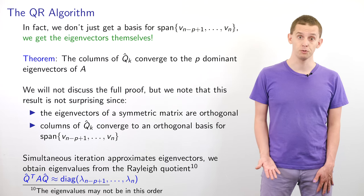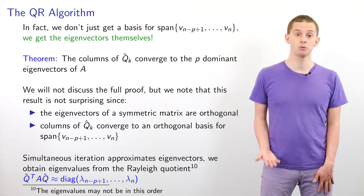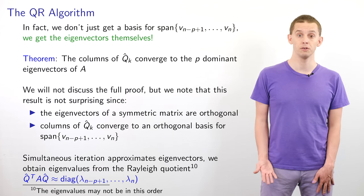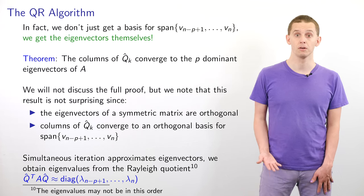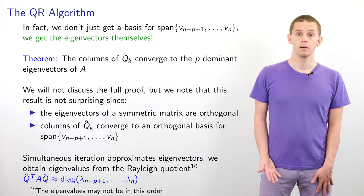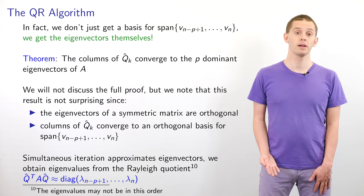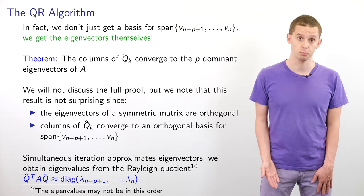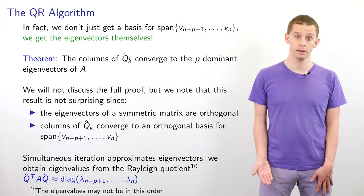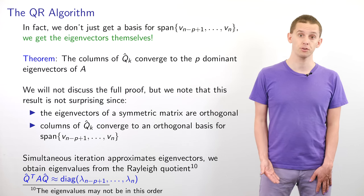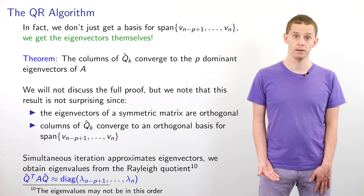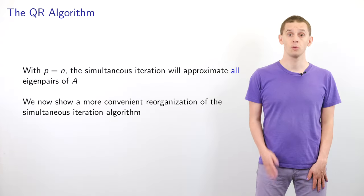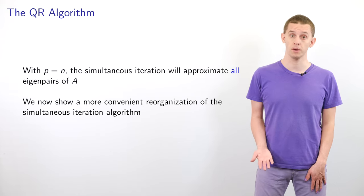There is a theorem that says the columns of q̂_k converge to the p dominant eigenvectors of A. We're not going to look at the full proof here, but it's not surprising because the eigenvectors of a symmetric matrix are orthogonal, and we know that the columns of q̂_k converge to an orthogonal basis for the span of the p largest eigenvectors. The simultaneous iteration approximates the eigenvectors, but we can obtain the eigenvalues via a Rayleigh quotient expression: we compute q̂ transpose A q̂, which will approximate a diagonal matrix with the eigenvalues on the diagonal. With p equal to n, the simultaneous iteration will approximate all of the eigenvectors of A.